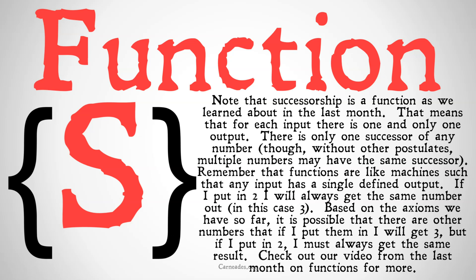If I put in a two, I will always get the same number out — in this case three — once we've fully defined everything. Based on the axioms we have so far, it's possible that other numbers could also output three, but if I put in two, I must always get out the same result for this to be classified as a function. This axiom alone does not explicitly define successorship as a function, but once we have all of the postulates together, we'll see how it is a function, and must be a function.